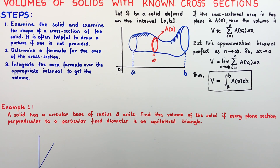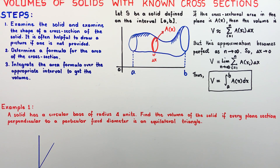To apply this formula, we follow three common steps. Step one: examine the solid and examine the shape of its cross-section — it is often helpful to draw a picture if one is not provided. Step two: determine a formula for the area of the cross-section. Step three: integrate the area formula over the appropriate interval to get the required volume.